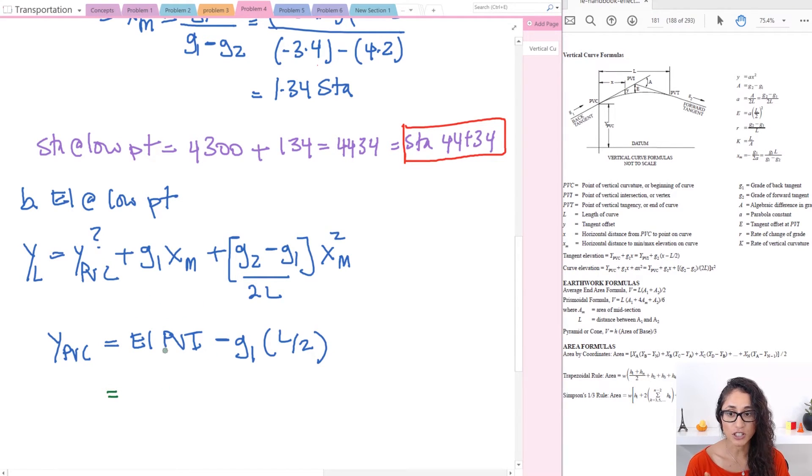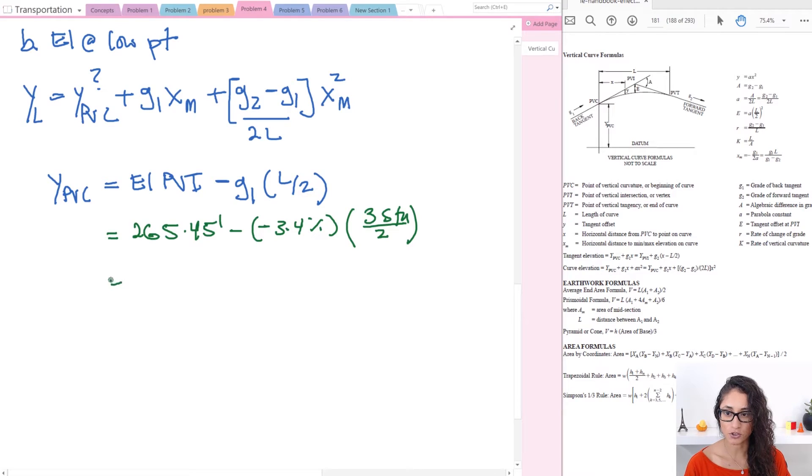So elevation at PVI was given to us as 265.45 feet minus G1 which is minus 3.4, so don't forget the negative, times L which is 3 station divided by 2. Note that I didn't use 300 feet because I kept my percentage. If you want to use 300 feet you have to divide this one by 100. If you plug in this you should get an answer of 270.55 feet. So that's your elevation.